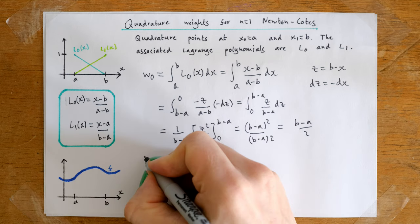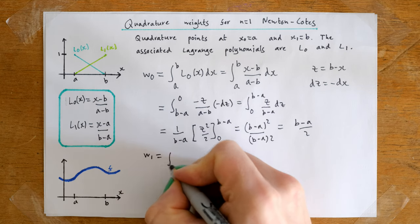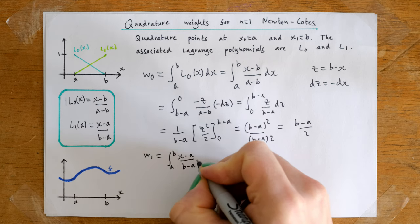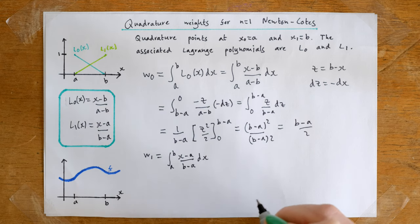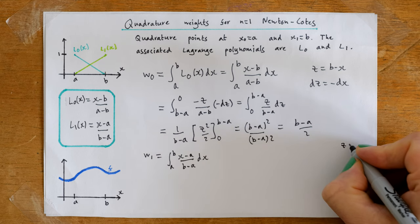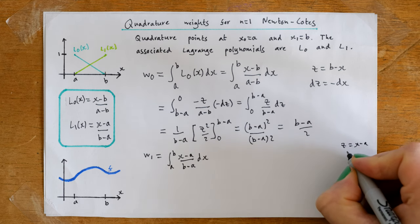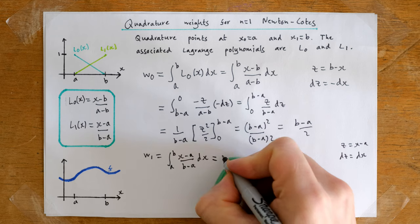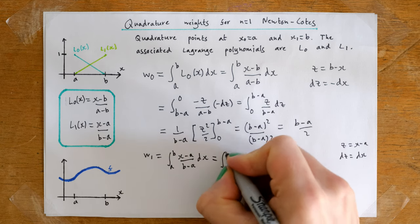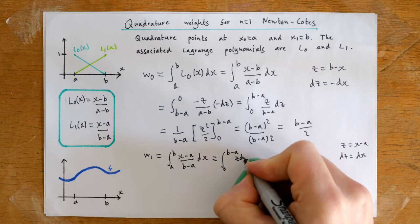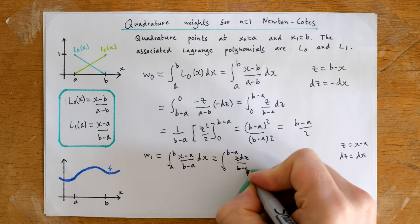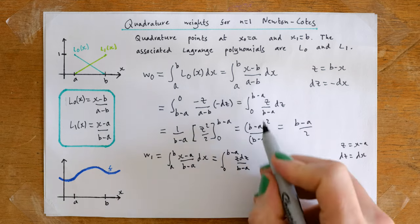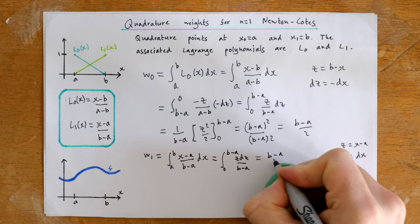Now let's look at w1. We have the integral from a to b of x minus a over b minus a dx. Making the substitution z equals x minus a, so dz equals dx, this becomes the integral from 0 to b minus a of z over b minus a dz. We can actually see that this is equal to what we had before, and so it will evaluate to the same thing: b minus a over 2.